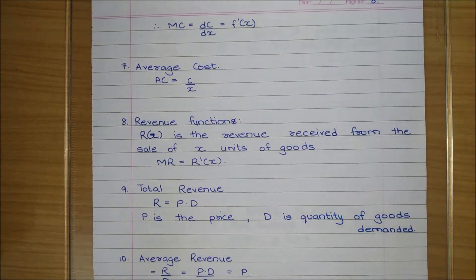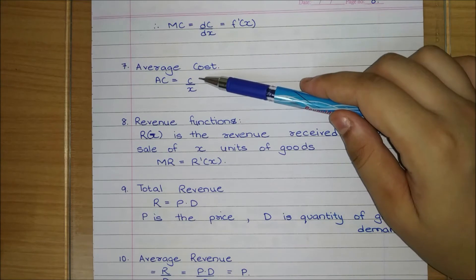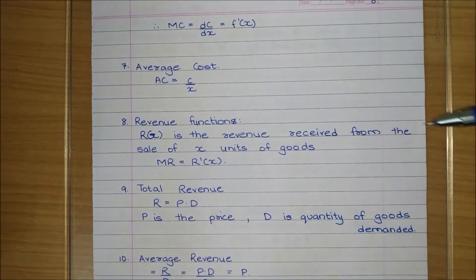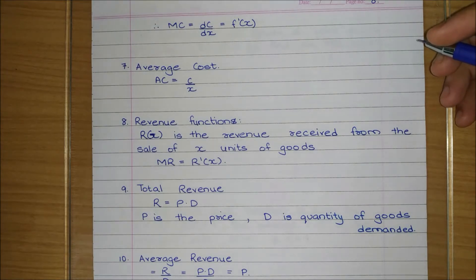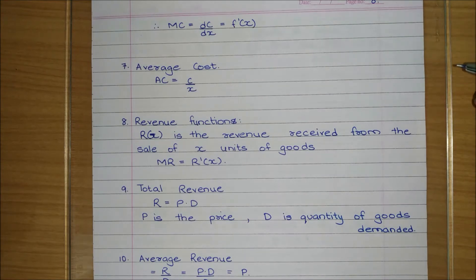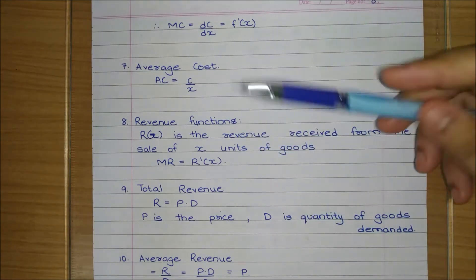Average cost is the total cost function divided by the number of goods produced. For example, if a factory pays 500 rupees rent, 500 rupees electricity, and 50 rupees per product, and produces 10 items, the total cost is 1500. Dividing 1500 by 10 gives 150 rupees per product as the average cost — even though only 50 rupees is spent per item, we must include rent and electricity.